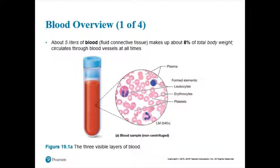When you donate plasma, you're donating the liquid environment your blood cells are floating in. In this chapter, we're going to break down these two major parts to your blood: the liquid environment — the plasma — and see what it's composed of. And then we'll look at the formed elements.